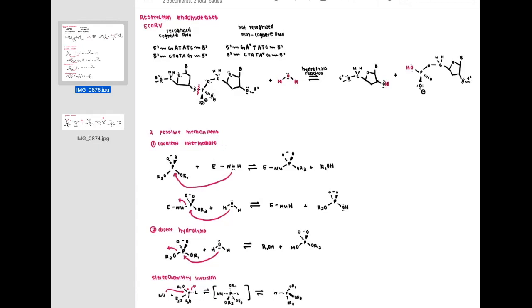Some additional notes about EcoRV: the AT sequence is important because it allows for easier distortion so that when the DNA is bound it can cause a kink. The five-prime terminal G's and C's are also important in the recognition site for hydrogen bonding in order to communicate with the active site upstream that kinking is allowed, so that the cognate DNA is able to bind to the active site and can therefore be cleaved.